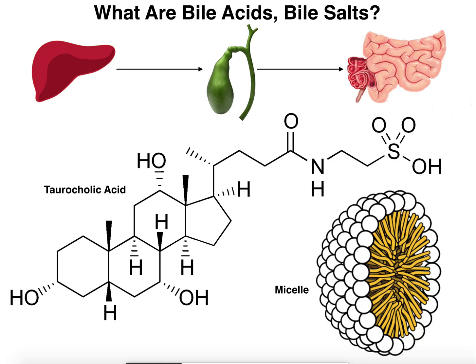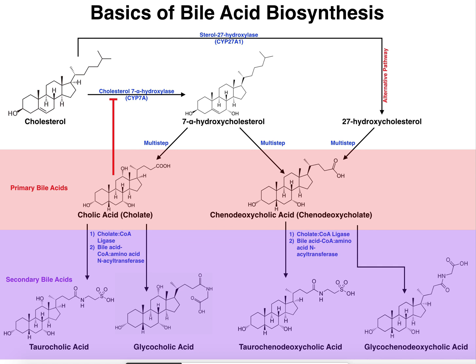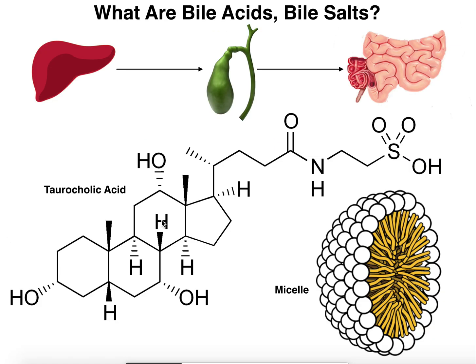What is bile? Bile is a substance — a solution or mixture of a bunch of different compounds that's produced by the liver. The solution of bile is going to contain a lot of different compounds, one of which is this compound right here. This is called taurocholic acid. This is what we're going to see is called a secondary bile acid, but it is nonetheless a bile acid — one of the compounds found in bile. There are other kinds as well.